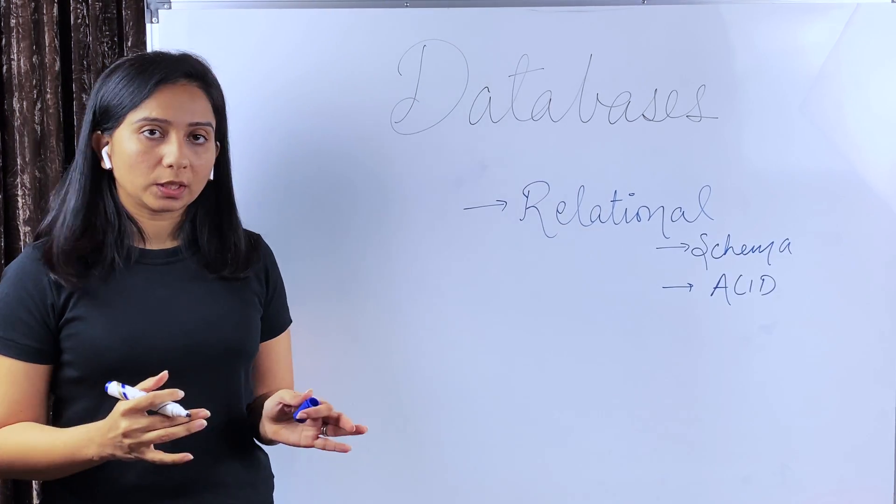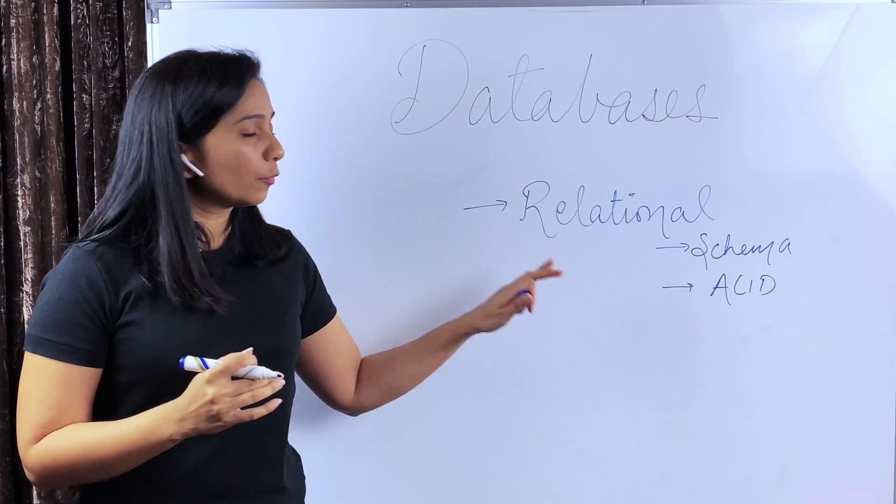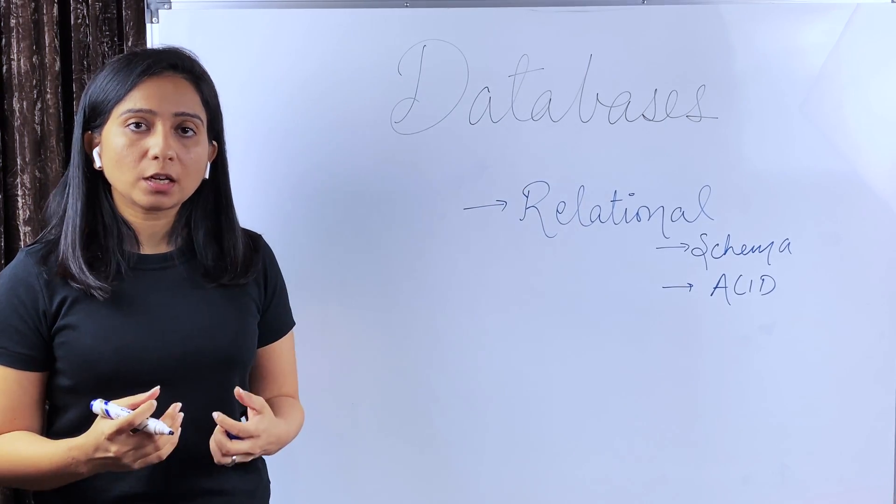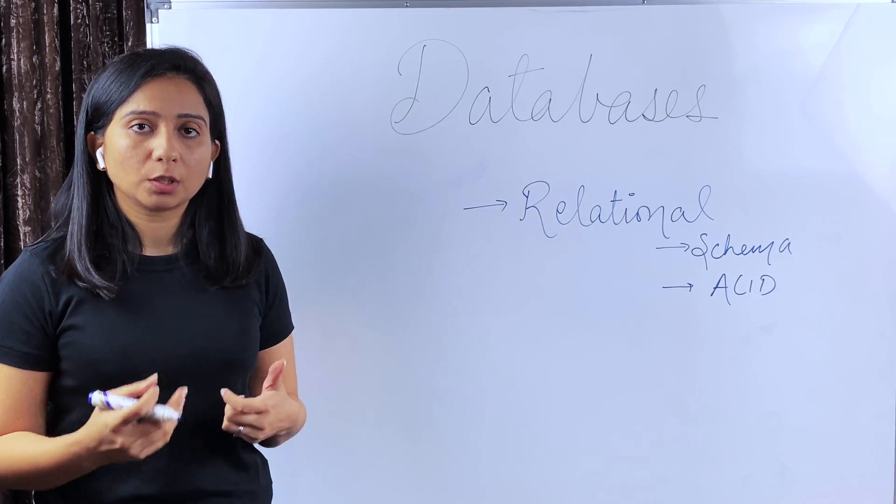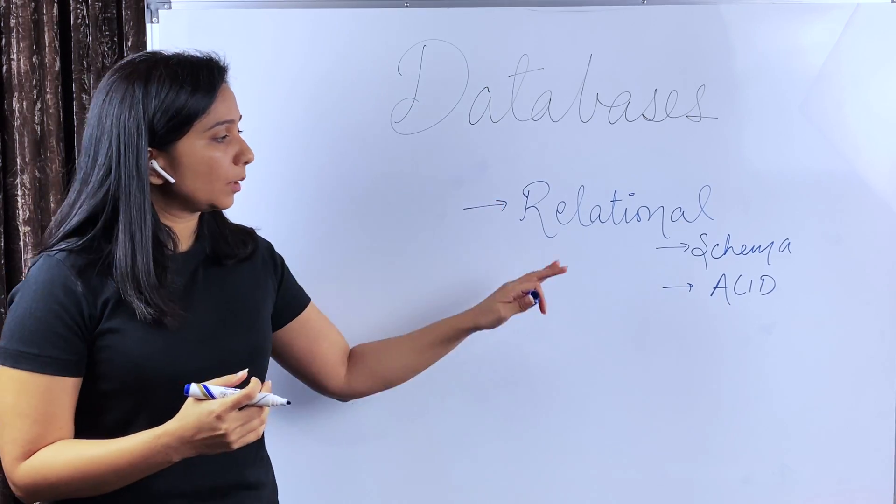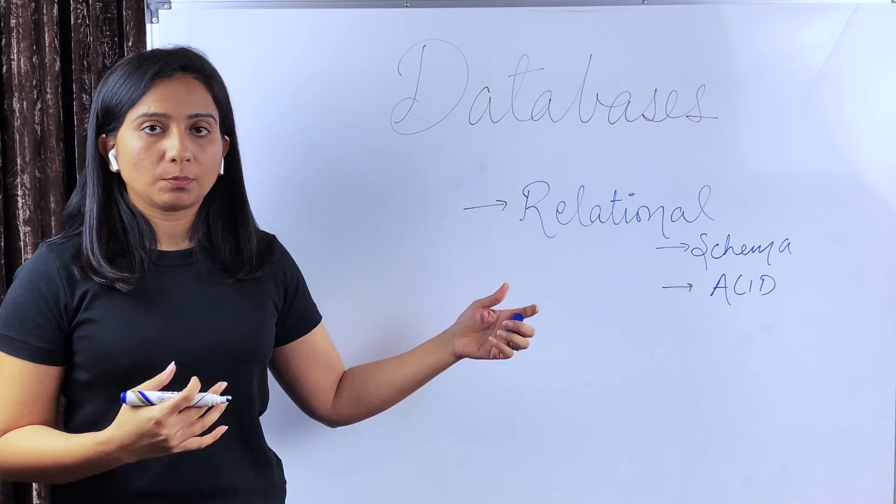Relational DBs are the most popular ones. And here are the two factors that help you decide whether you have to select a relational DB for your use case or not: schema and ACID properties. Let's talk about schema.